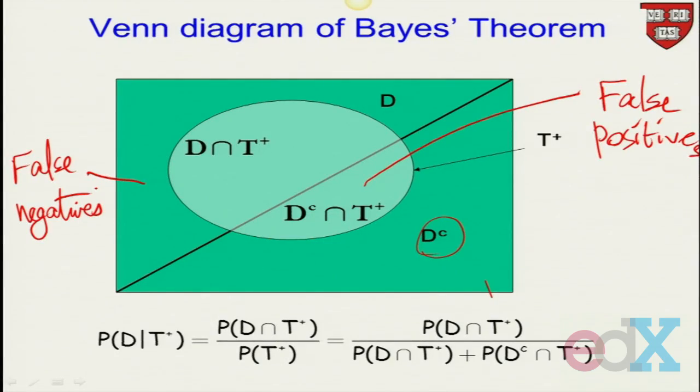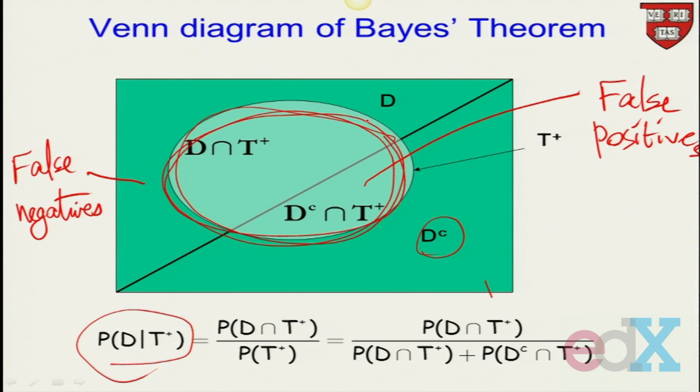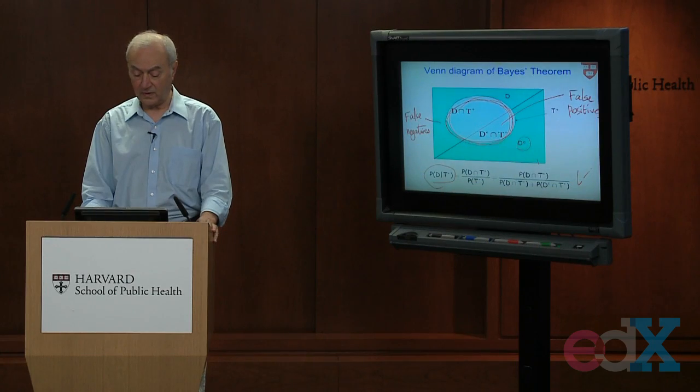Now, Bayes' theorem gave us this. And you can see that if we've tested positive, we are in this ellipse. So that becomes our universe now, and we can calculate these quantities.